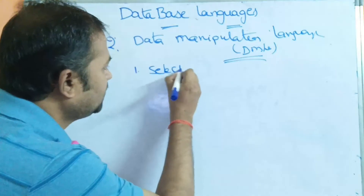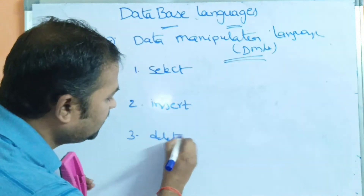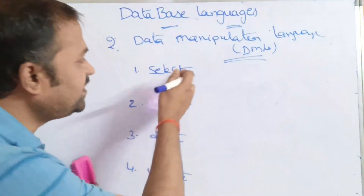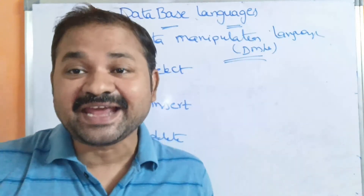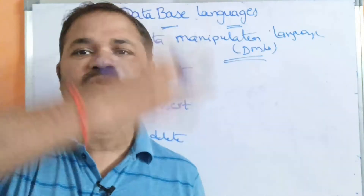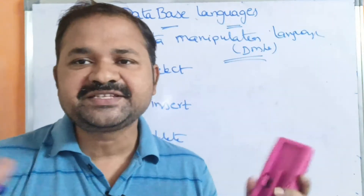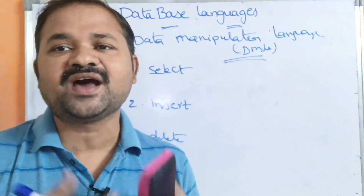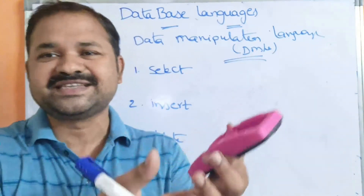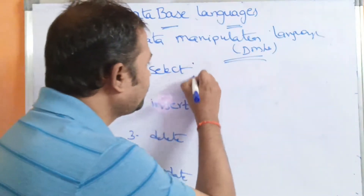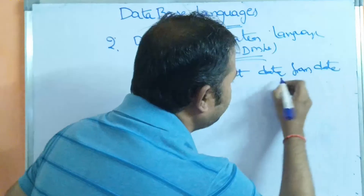The DML commands are: SELECT, INSERT, DELETE, and UPDATE. The SELECT command is useful in order to select content from a table. We can select the entire table using SELECT * FROM table, or we can select a single value, a single row, or multiple rows. So SELECT is used to retrieve data from a database object.